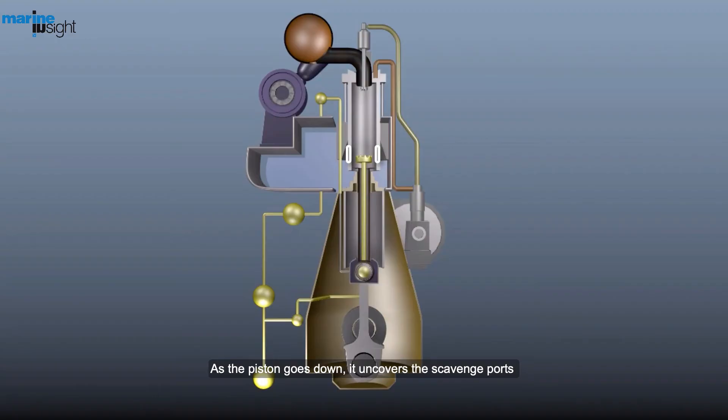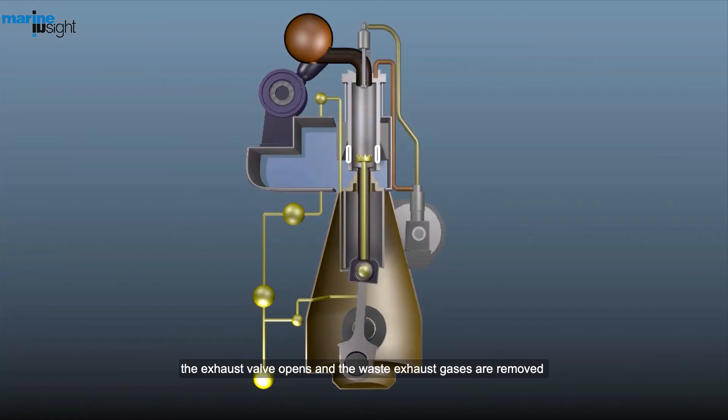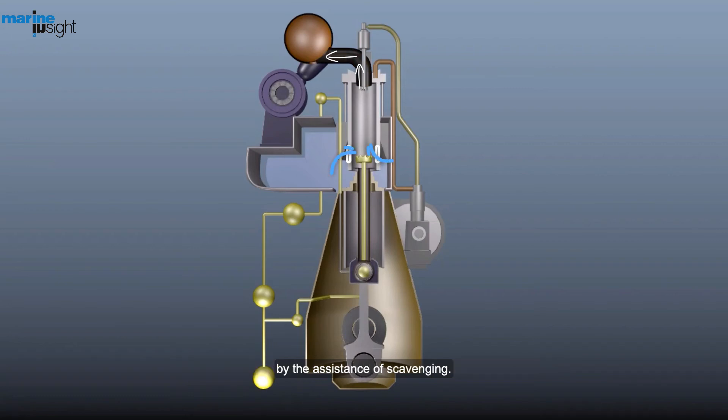As the piston goes down, it uncovers the scavenge ports and fresh air comes inside. At the same time, the exhaust valve opens and the waste exhaust gases are removed by the assistance of scavenging.